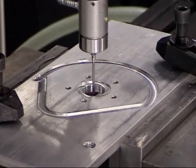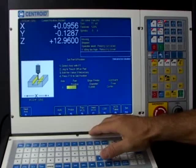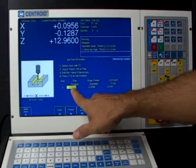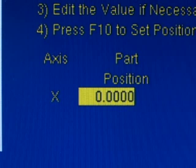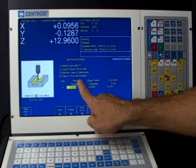Okay, the probe's found the center of the circular pocket and it's waiting for us to set the position. I can type in any number I wanted right here. If I need to call the center of that circular pocket something else other than 00, that's where you type this number in right here, the part position.